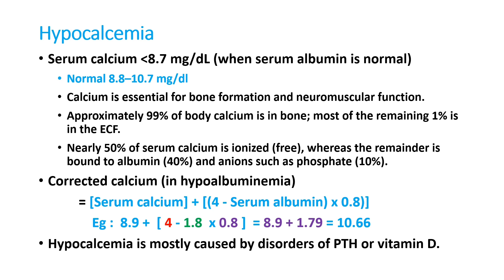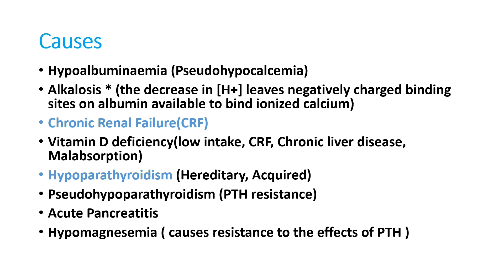Hypocalcemia is mostly caused by disorders of parathyroid hormone and vitamin D, and can also be seen in renal failure. The important causes include chronic renal failure, hypoparathyroidism, and hypoalbuminemia. Hypoalbuminemia produces falsely low calcium — this can be called pseudo-hypocalcemia.